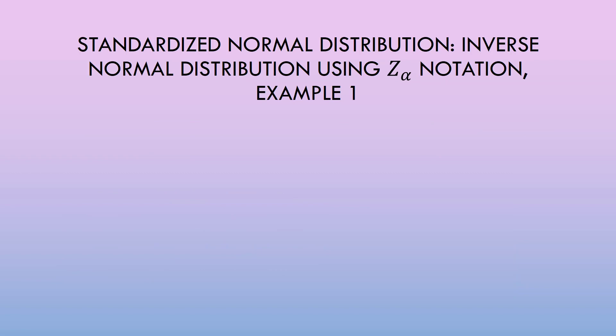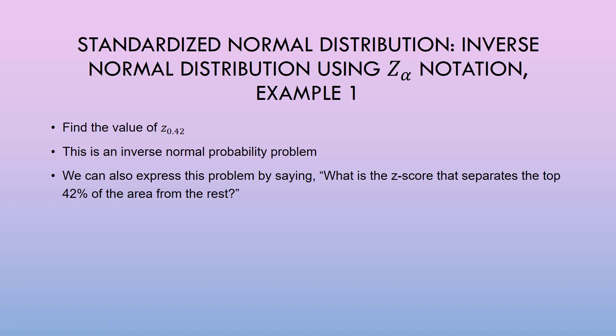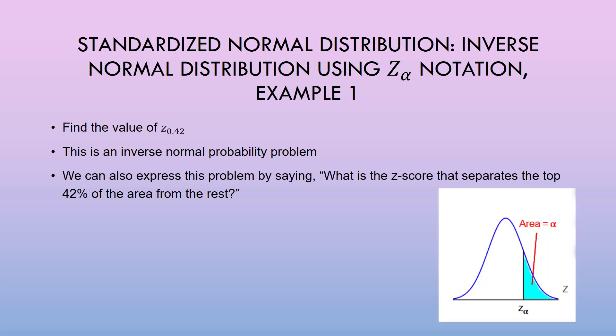Let's work an example using this new notation. Find the value of z sub 0.42. This is an inverse normal probability problem — we want the z-score that separates the top 42% of the area from the rest. The shaded region accounts for 42% of the area, and the remaining area is 1 minus 0.42, or 0.58.